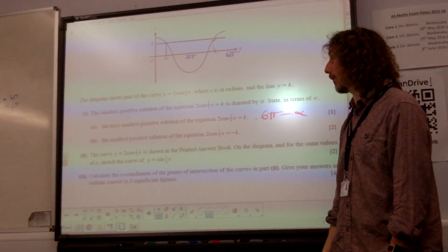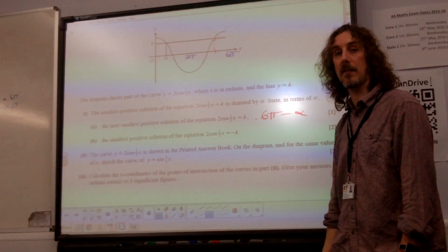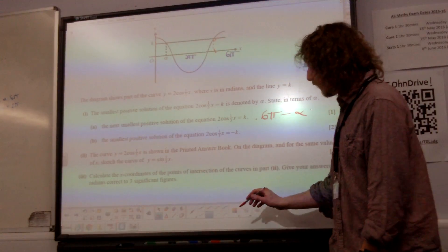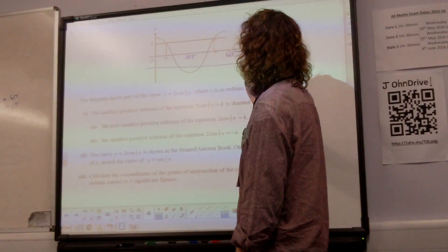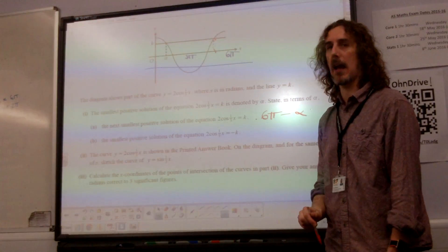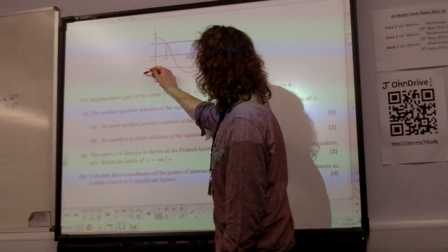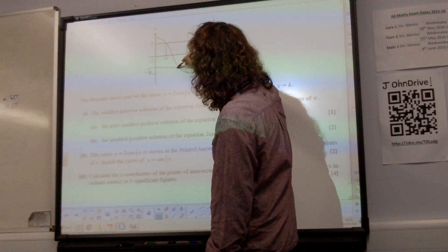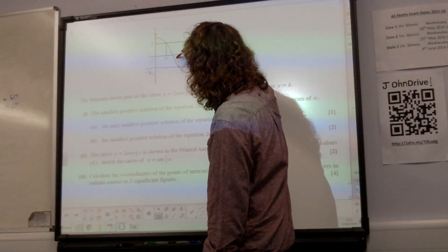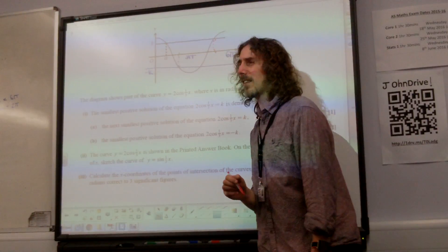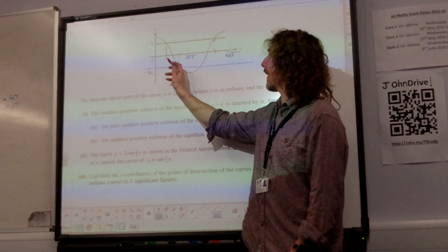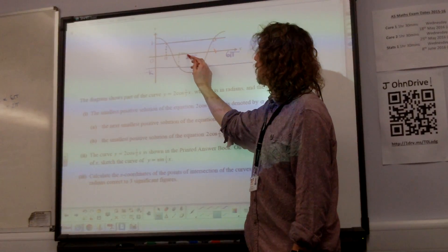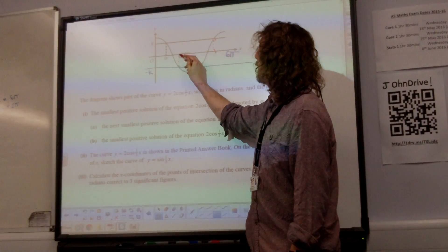Part B, the smallest positive solution of the equation 2 cos third x equals minus k. If it's minus k instead, minus k would be the horizontal line down there. And where does that meet the graph? Well, it meets it here. And again, the same kind of symmetry that's in the graph. It says that if that distance there is alpha, that distance there is alpha as well.